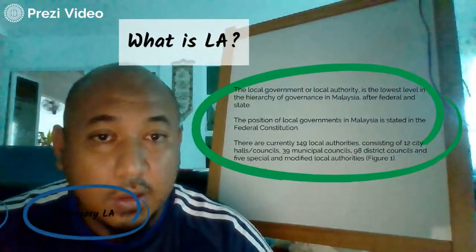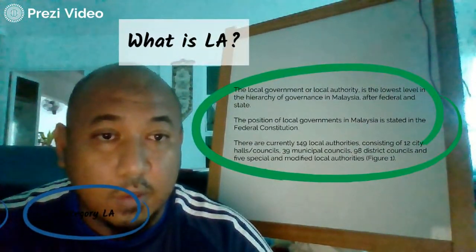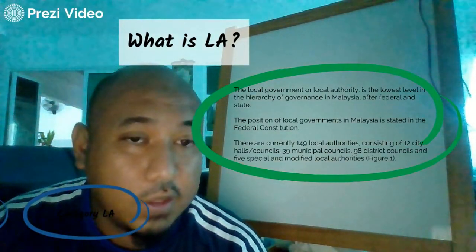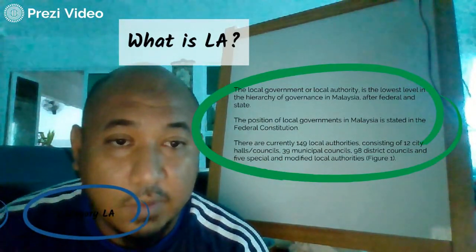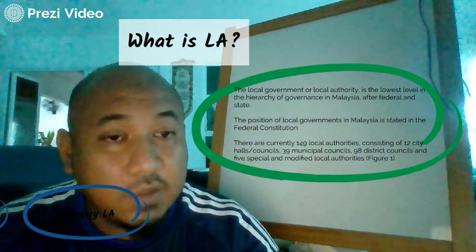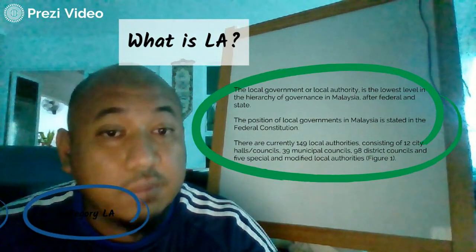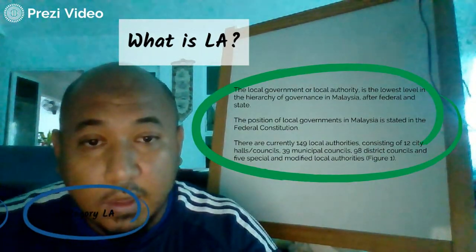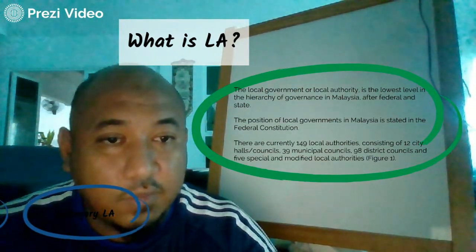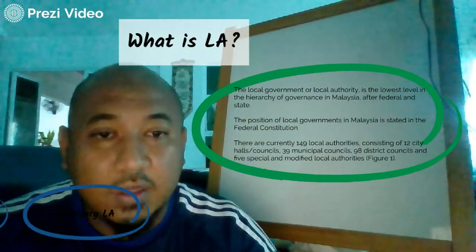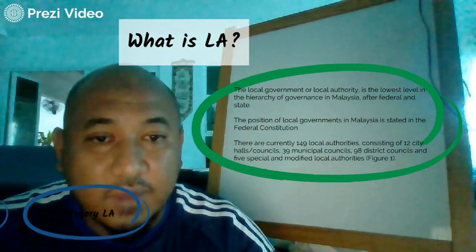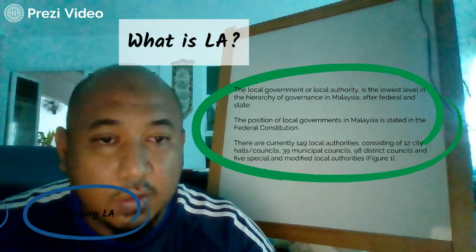The local authorities, or local government, is the lowest level in the hierarchy of government in Malaysia, after federal and state. We need to know the position of local government in Malaysia as stated in the Federal Constitution. There are currently 149 local authorities in Malaysia, consisting of 12 city hall councils, 39 municipal councils, and 98 district councils.